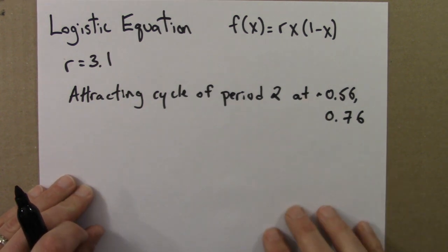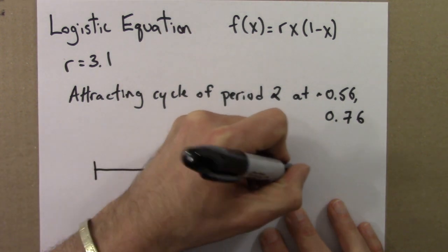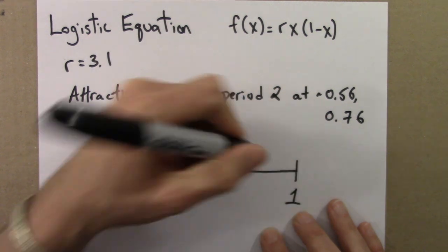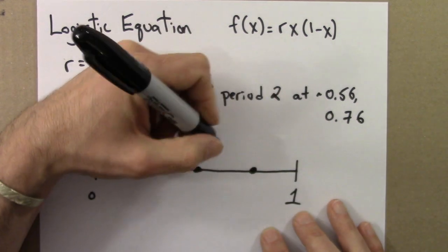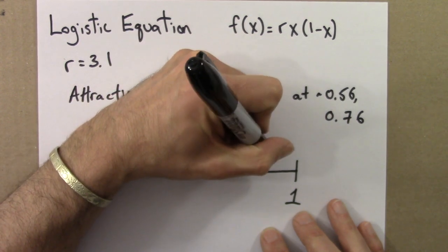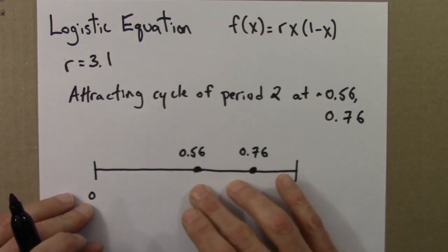And we can summarize this behavior in our final state diagram as follows. There would be two dots, 0.56 and 0.76. There are two final states here.